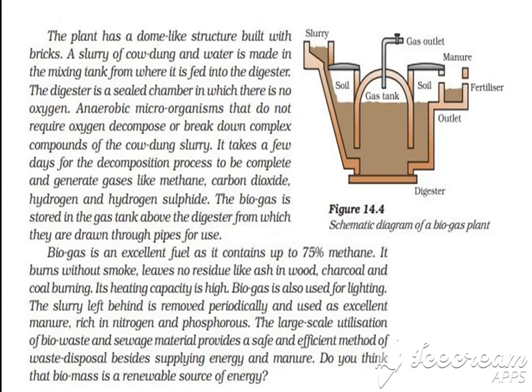Here is the working of the biogas plant. The plant has a dome like structure, built with bricks. A slurry of cow dung and water is made in the mixing tank, from where it is fed into the digester.